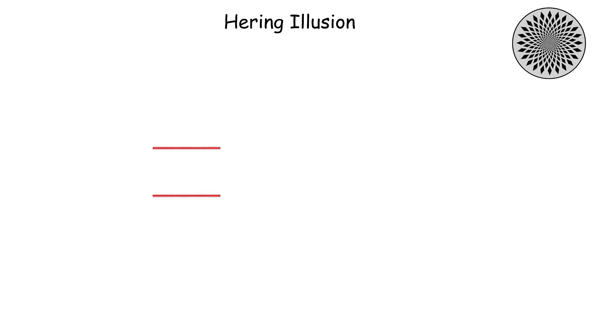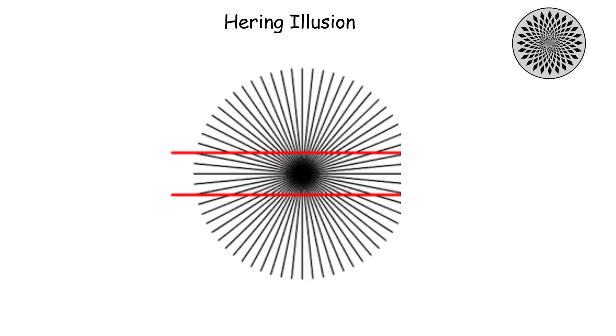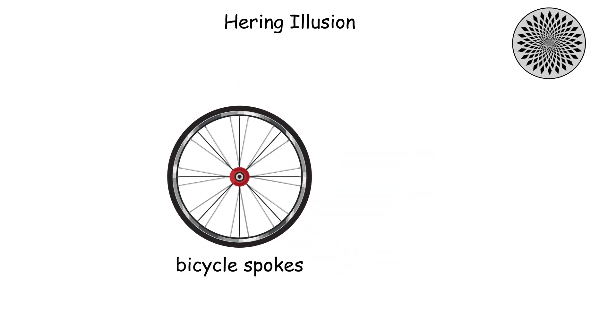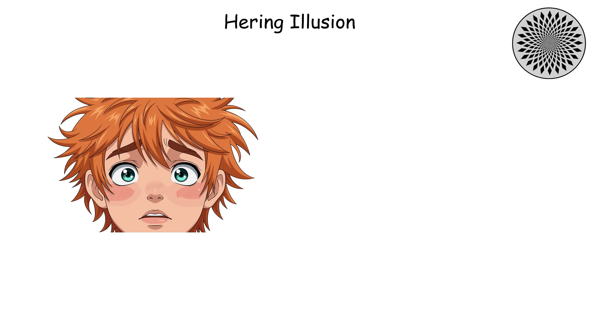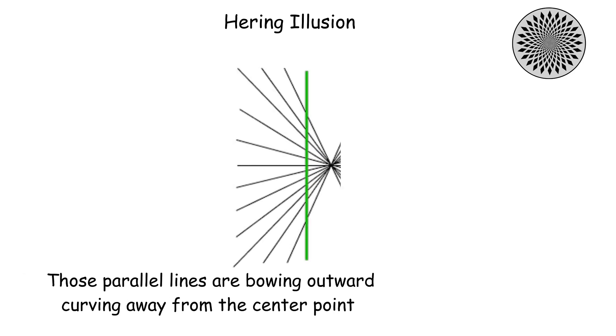In this illusion, you've got two perfectly straight parallel lines, but they're placed over a background of radiating lines that all converge at a central point, like bicycle spokes or sun rays. Your eyes look at this setup and immediately think those parallel lines are bowing outward, curving away from the center point. But grab a ruler, and you'll see they're perfectly straight.